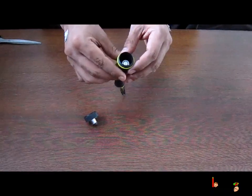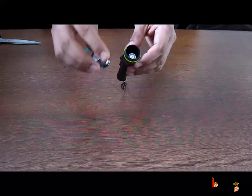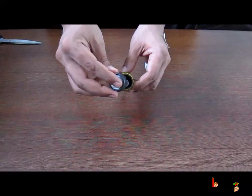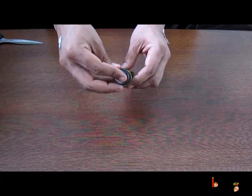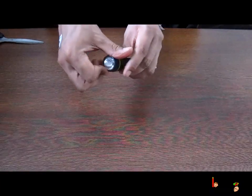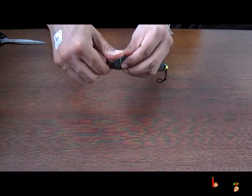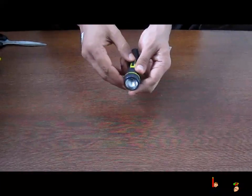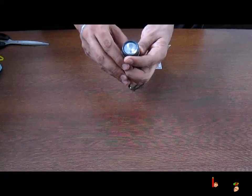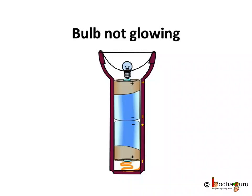Now I close the bulb, tighten it a bit and now I turn on the switch of the torch. Hmm, why is the bulb not glowing?